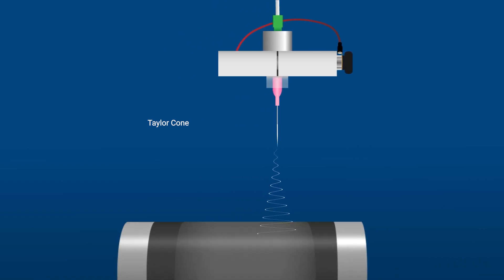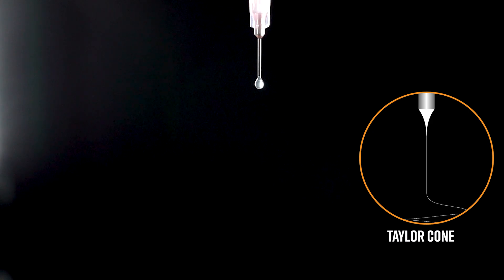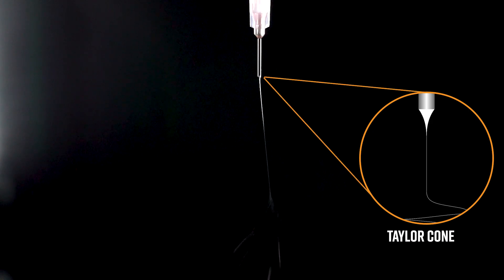So what's this Taylor cone I keep mentioning? The Taylor cone, named after the British physicist Sir Geoffrey Taylor, is the conical shape formed at the tip of the polymer solution as it exits the needle. It's like the maestro of electrospinning, and here's why it's so important.